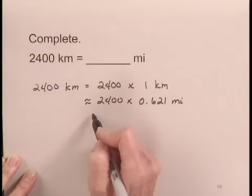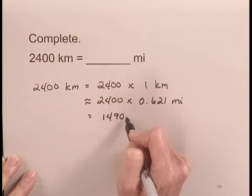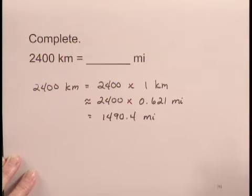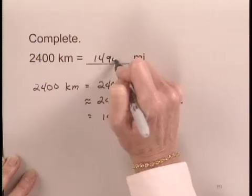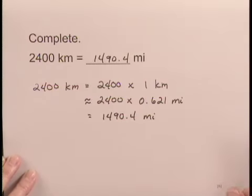When we carry out this multiplication, we get 1,490.4 miles. So we can fill in the blank up here with 1,490.4. This is the conversion from 2,400 kilometers.